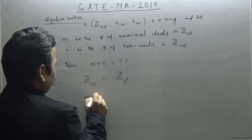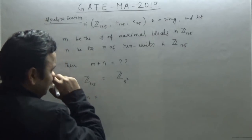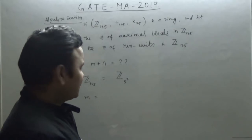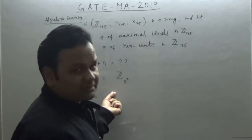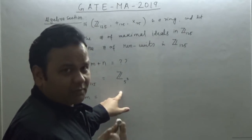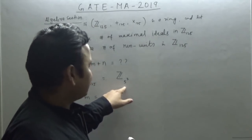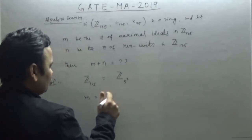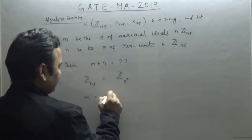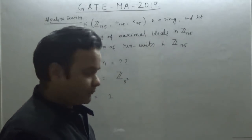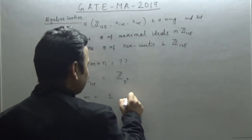The first thing: M is the number of maximal ideals. The number of maximal ideals equals the number of distinct primes present in the factorization. How many primes are there? One — just the prime 5. So the number of maximal ideals M equals one.